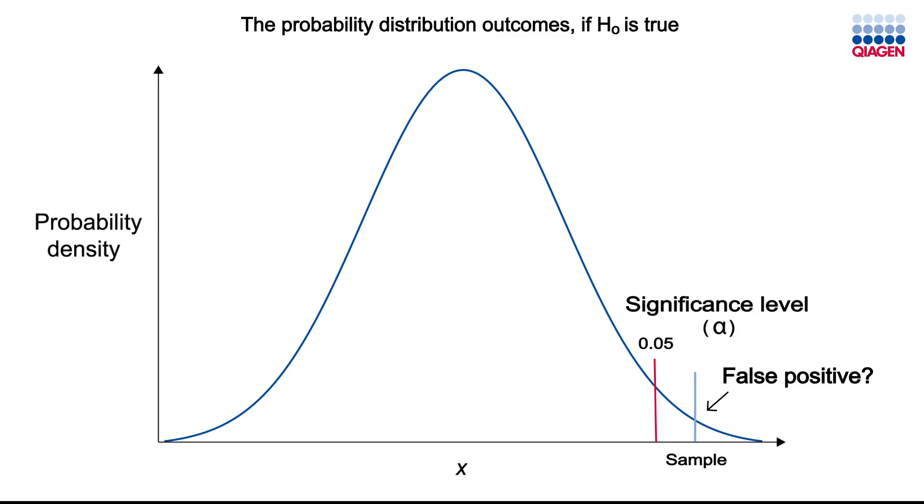It's possible that you could unknowingly reject a null hypothesis, when in reality, no real difference exists between the groups of samples you're testing. If you have only one hypothesis to test, then it's fairly simple to determine the probability of false positives.